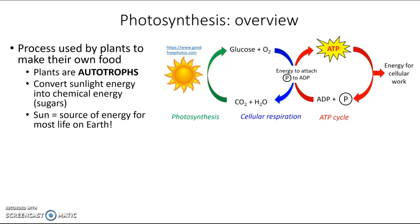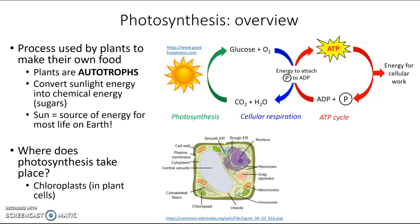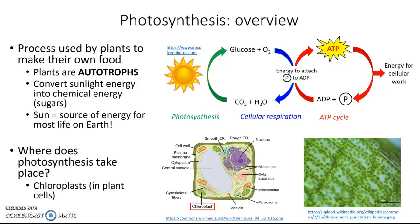The next thing you need to know is where does photosynthesis take place? Many of you will probably remember that it takes place inside the chloroplasts in plant cells. If we take a look at a plant cell and all its organelles, the chloroplast is responsible for photosynthesis. If we look at plant cells under the microscope, you can see the individual box-like cells, and inside each one you can see these little green blobs — those are the chloroplasts.